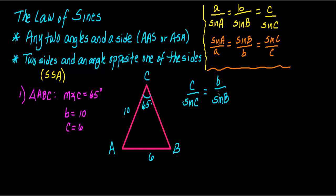And once we've established this equation, you fill in your information. Side C is 6, and sine of angle C is the sine of 65 degrees. And that equals B, which is 10, and the sine of angle B.